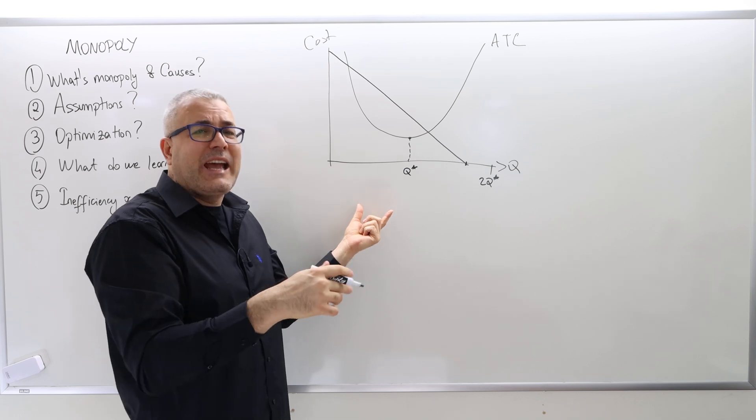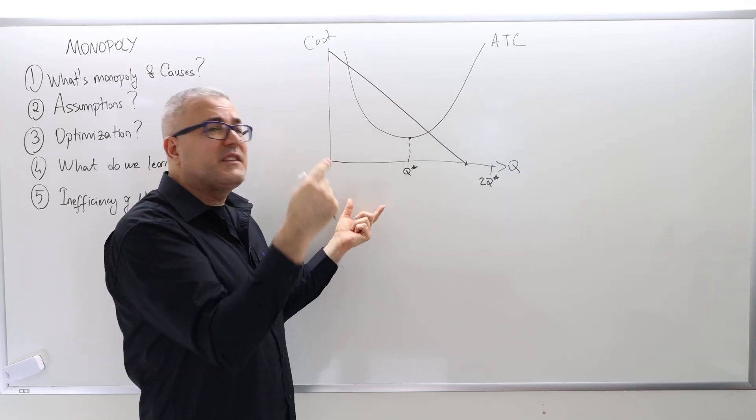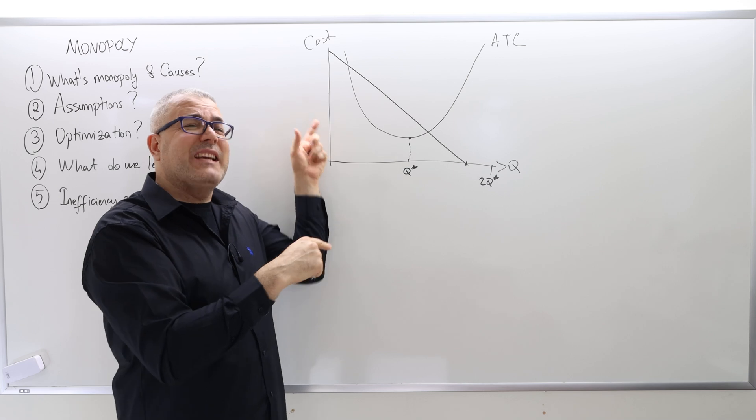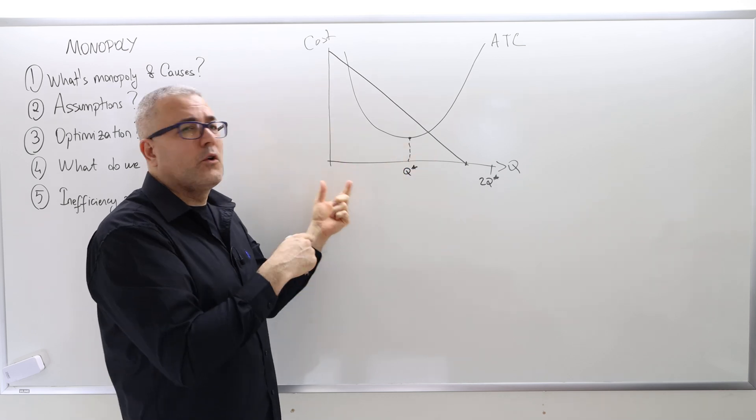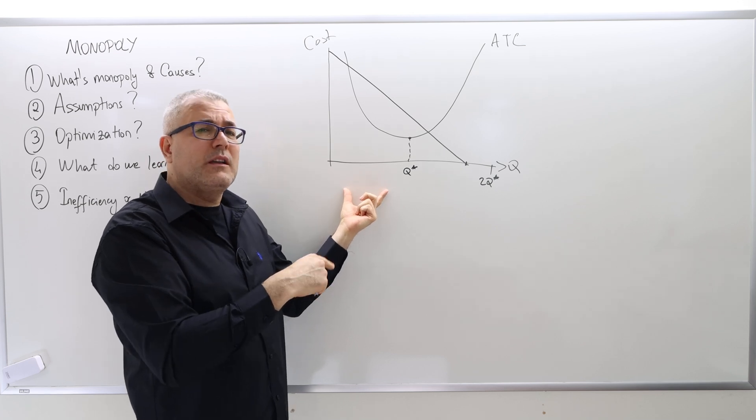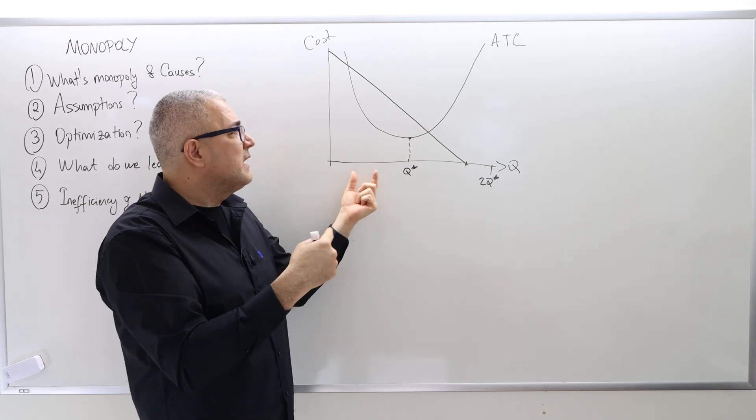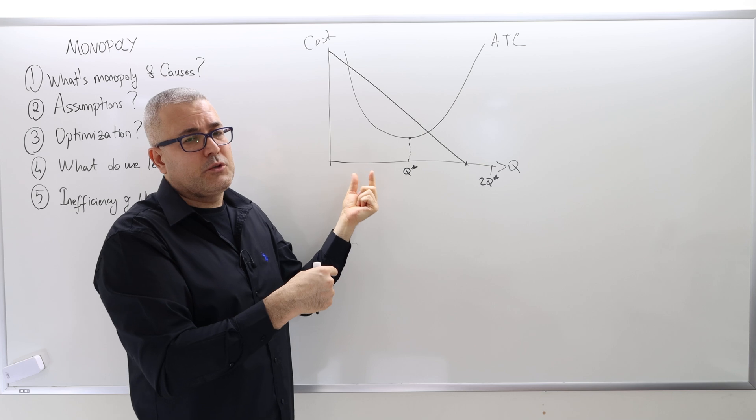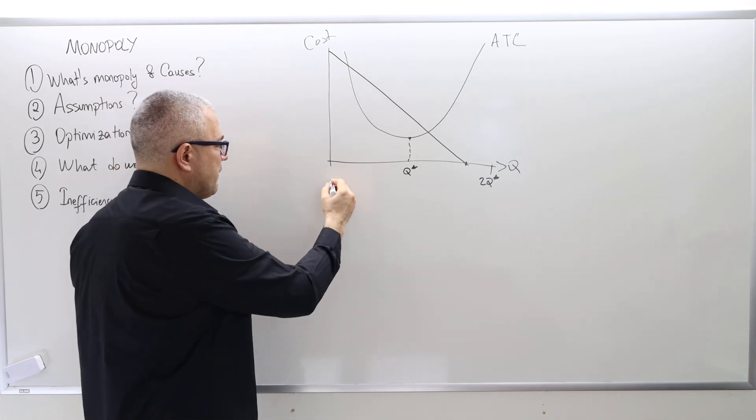So, this market is not going to allow, in a sense, a second firm, second identical firm, obviously, to operate in this market. A second firm may operate in this market if the second firm has a significantly lower average total cost. In comparison, however, let's suppose exactly the same market demand.